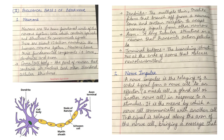Neurons are the basic functional units of the nervous system — cells which contain specialized structures to communicate signals. There are about 12 billion neurons in the human nervous system. Neurons have three fundamental components: soma, dendrites, and axon. Please refer to the diagram below for better understanding.